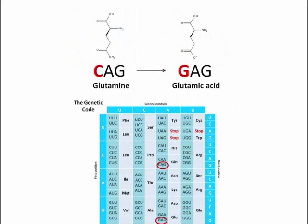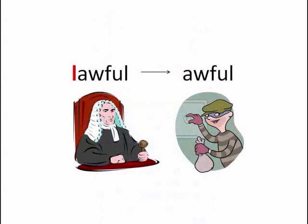DNA is constantly replicated, repaired, and recombined, and whilst these processes are usually highly efficient, errors can occur. Bases in the sequence of a gene can change — a cytosine may be replaced by a thymine, for example. This can create a completely new codon that encodes a different amino acid than before, and as a result, it can change the final product a gene expresses. In a similar sense, changing a single letter of a word can drastically alter its meaning: think of 'lawful' — take out the L and you get 'awful', a completely different word.